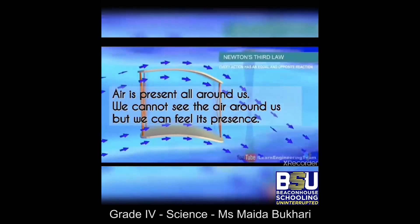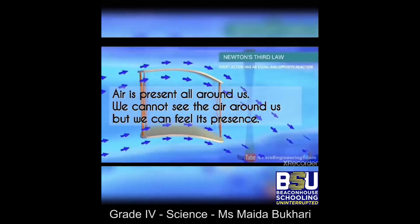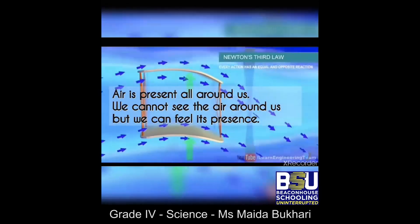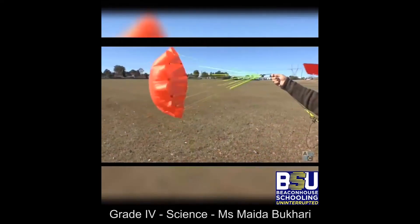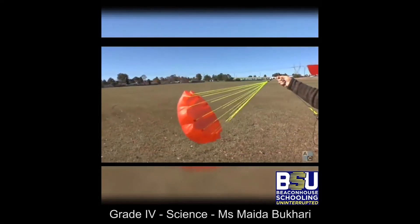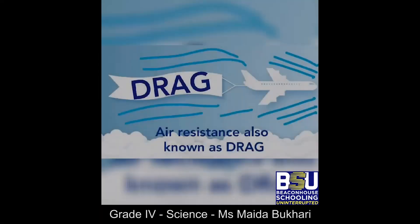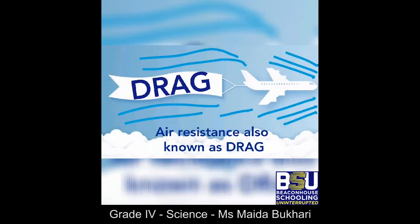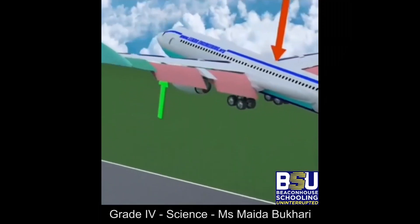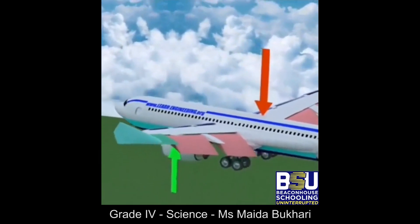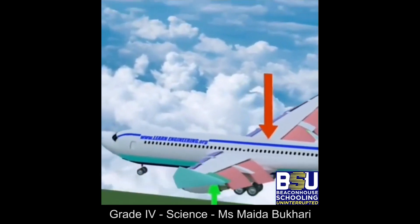Air pressure is present all around us, but we cannot see it. This air pressure causes air resistance. Air resistance, also known as drag or drag force, is a type of friction which pushes a moving object back when it moves through air. Wind is moving air, and we are surrounded by air made up of invisible gases.